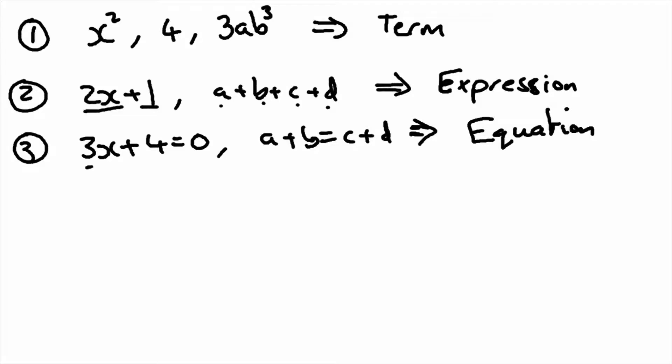Two things that are equal to each other. 3x plus 4 is equal to 0, a plus b is equal to c plus d.